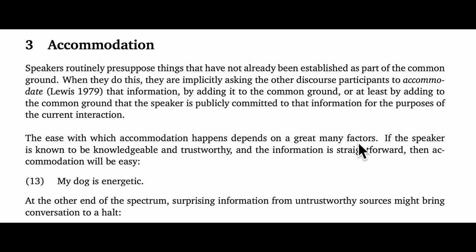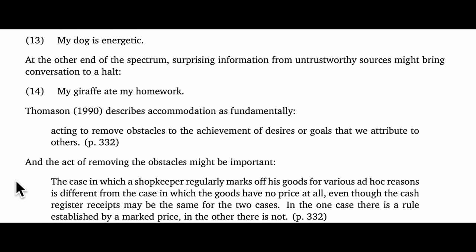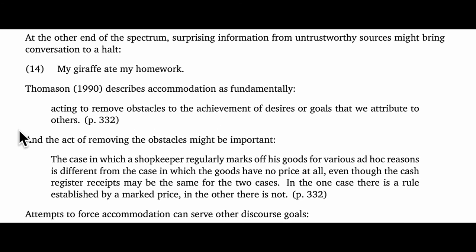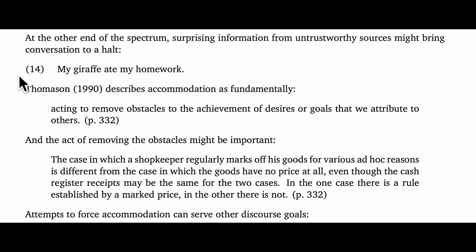The ease with which accommodation happens depends on a great many factors. If the speaker is known to be knowledgeable and trustworthy and the information is straightforward, then accommodation is likely to be easy. Thus, if I say "my dog is energetic" even out of the blue, you'll accommodate that I have a dog and then interpret my sentence on that basis. It might be rather plodding of me to say "I have a dog and my dog is energetic," and rather obstinate of you to respond with "hey, you didn't first establish that you have a dog — presupposition failure." However, where the content gets more controversial, if you tell me "my giraffe ate my homework," I won't just accommodate the content — I might accommodate that you believe you have a giraffe, but I won't accommodate that you do unless you live on a wildlife preserve or something. By and large, we accommodate pretty automatically most of the time.